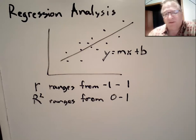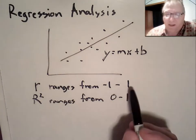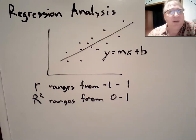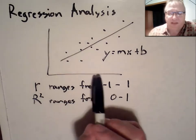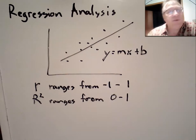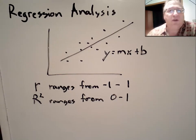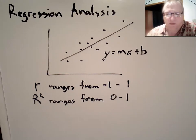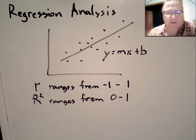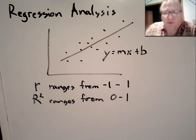If r equals positive one, there's a positive relationship between x and y — increase one, you increase the other. If r equals negative one, all sample points are on the line, but as you increase one, the other decreases — still a perfect correlation. This tells us not only that the sample data fits the regression model, but also that there is very little room for error. They're strongly correlated.